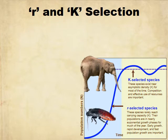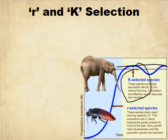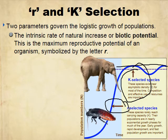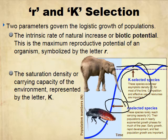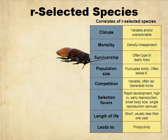R and K selected species: your K selected species live around the carrying capacity — the dotted line representing the amount of organisms an area can support indefinitely. This is the happy medium. Your R selected species can grow exponentially almost all the time. Your biotic potential is the maximum reproductive potential, symbolized by R, and carrying capacity is K — that's how you get R and K selected species.